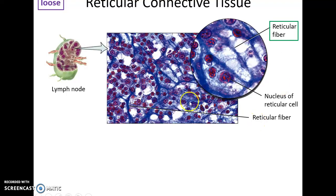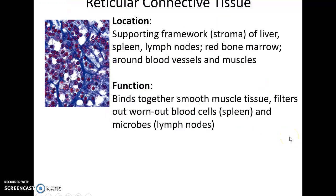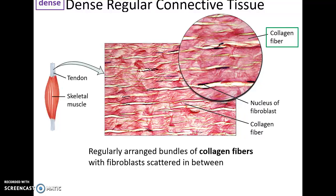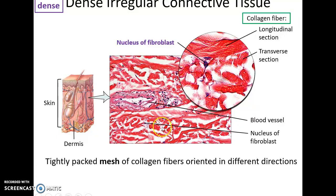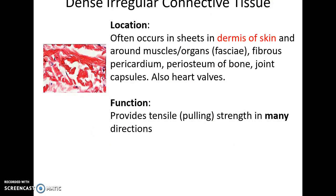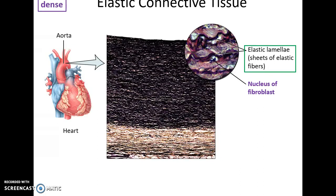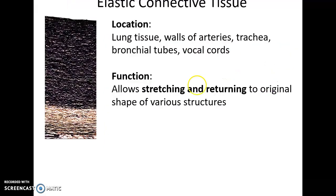Reticular connective tissue has only reticular fibers forming a mesh where cells are at rest, providing a framework within organs like the spleen, liver, lymph nodes, and red bone marrow, and helps filter out worn-out blood cells or microbes. Dense regular connective tissue is made up only of collagen fibers all in the same orientation, resisting forces in the same direction; it is found in tendons and ligaments. Dense irregular connective tissue has collagen fibers going in all directions, forming a mesh that resists tensile forces in many directions, such as in the dermis of the skin and around some organs and bones. Dense elastic connective tissue is made up of many elastic fibers, found in the walls of the lungs, arteries, and trachea — places that need to stretch and return to their original shape.